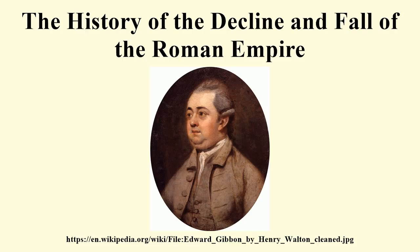The work covers the history of the Roman Empire, Europe, and the Catholic Church from 98 to 1590 and discusses the decline of the Roman Empire in the East and West. Because of its relative objectivity and heavy use of primary sources, unusual at the time, its methodology became a model for later historians. This led to Gibbon being called the first modern historian of ancient Rome.